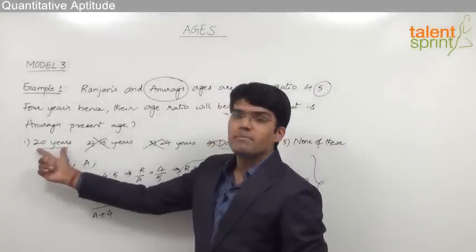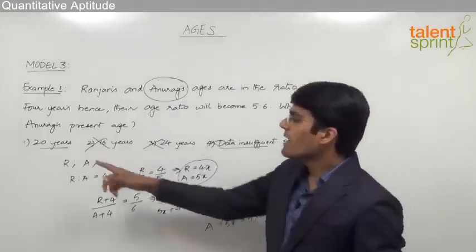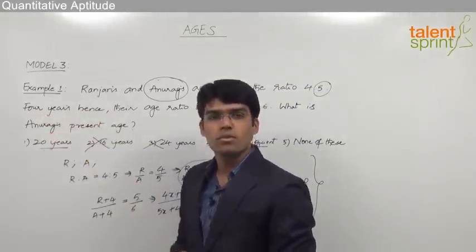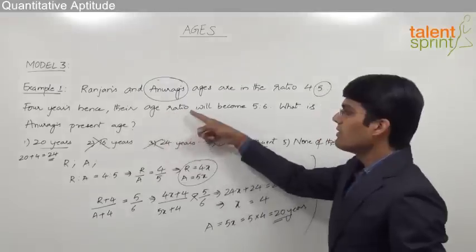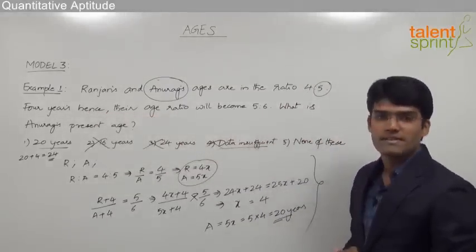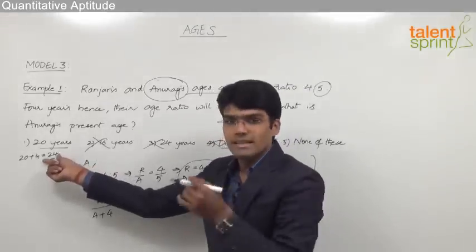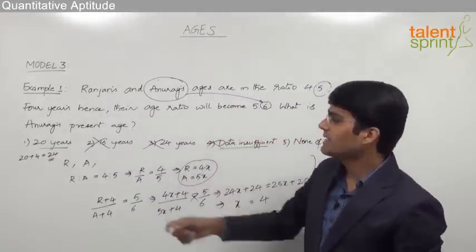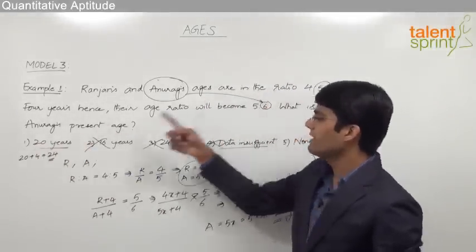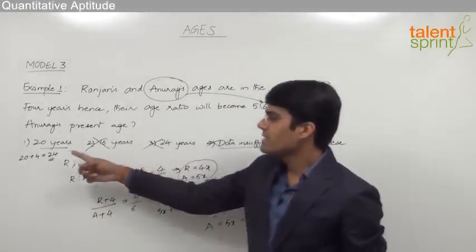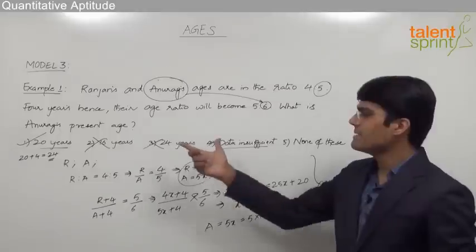Since the data is sufficient to answer the question, option four is also wrong. The only possible answers are option one or option five — none of these. If Anurag's present age is 20 years, four years hence his age will be 24. From the second condition, after four years Anurag's age should be a multiple of 6, and 24 is indeed a multiple of 6. This satisfies both conditions: present age is a multiple of 5, and age after four years is a multiple of 6. So option one is correct.